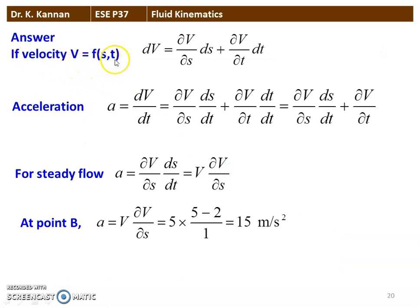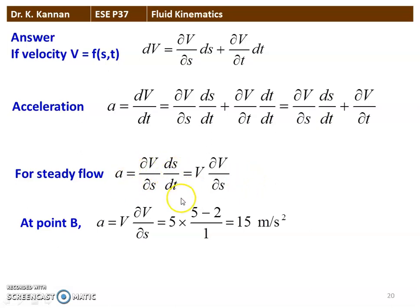Velocity V is a function of S and T — space and time. So dV = (∂V/∂S)dS + (∂V/∂T)dT. The acceleration A = dV/dT = (∂V/∂S)(dS/dT) + ∂V/∂T. For steady flow, the velocity change with respect to time is negligible, so A = V · (∂V/∂S). At point B, V = 5 m/s and ∂V/∂S = (5−2)/1 = 3, giving A = 5 × 3 = 15 m/s².